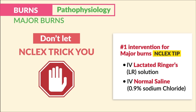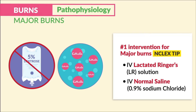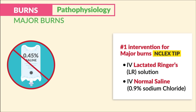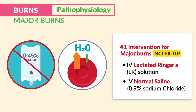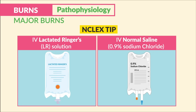Don't let the NCLEX trick you here. We're not administering 5% dextrose — that glucose in water — which is not an isotonic solution, and not 0.45% normal saline, which is a hypotonic solution. Only isotonic solutions here: lactated ringers or normal saline.